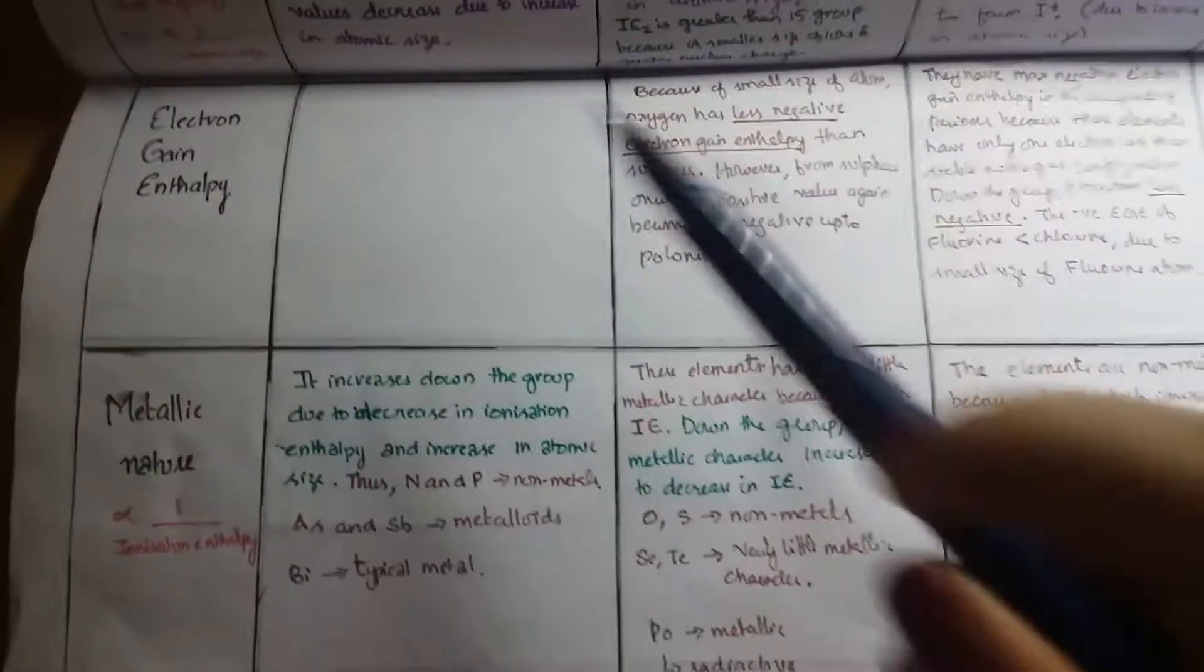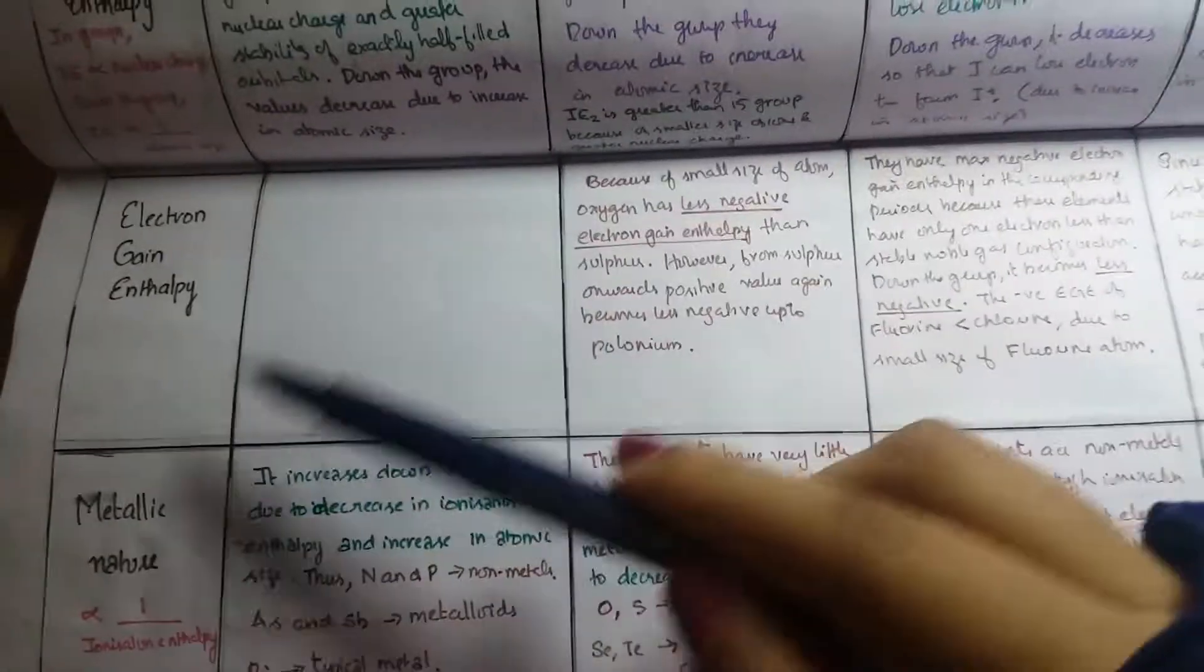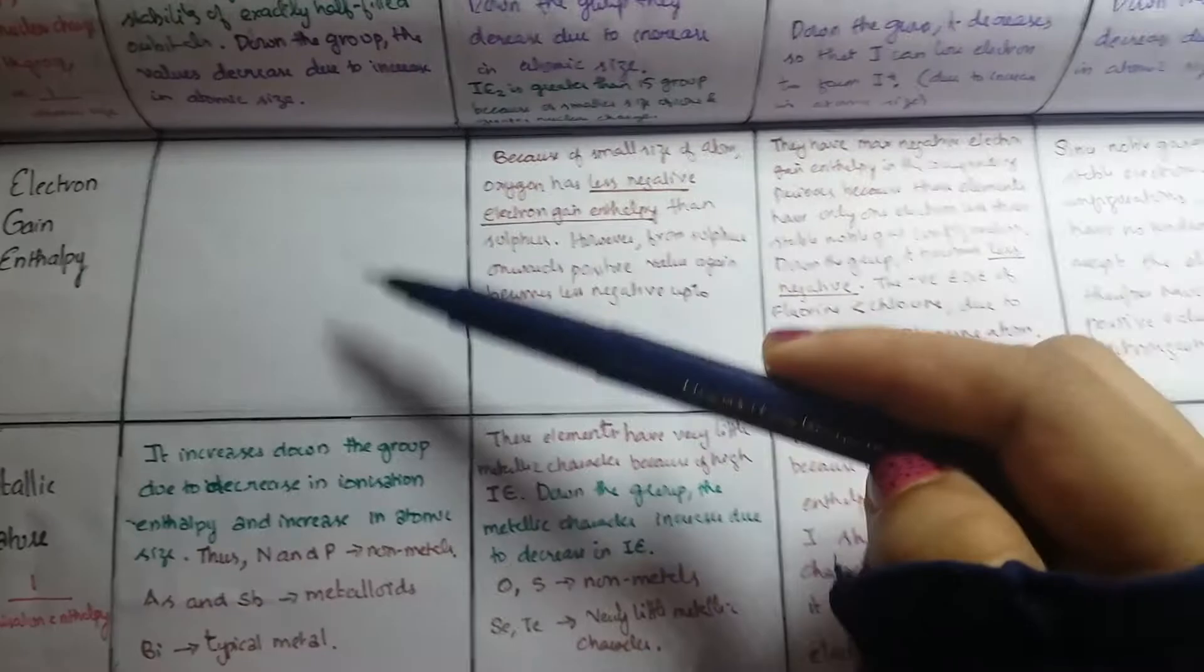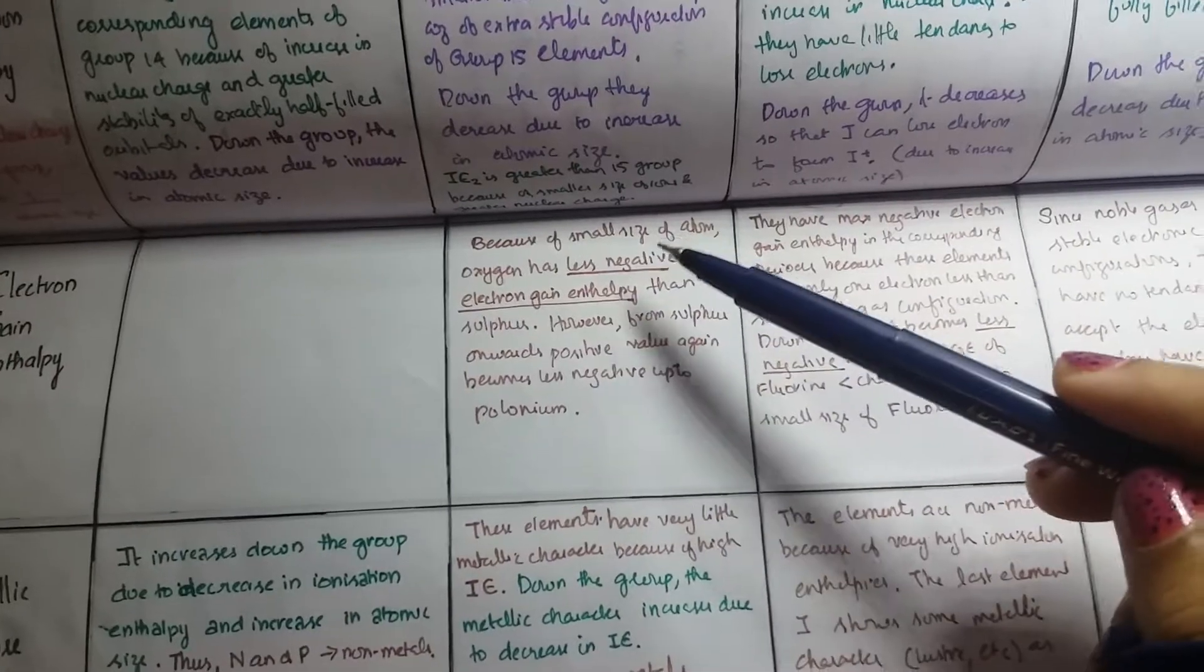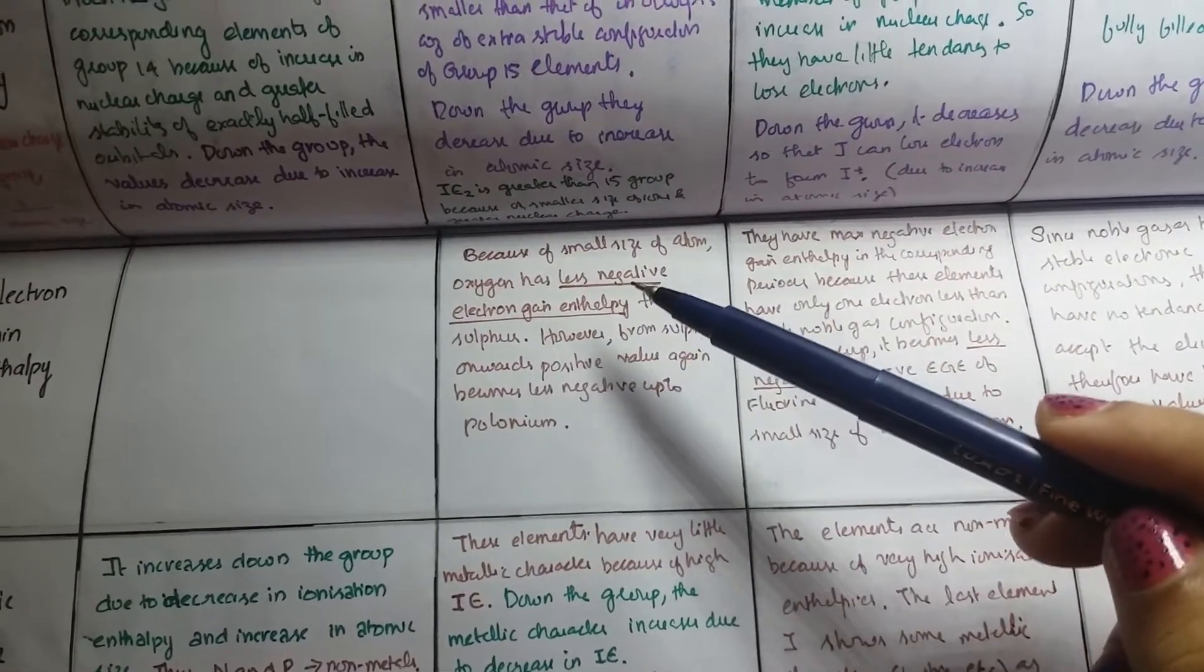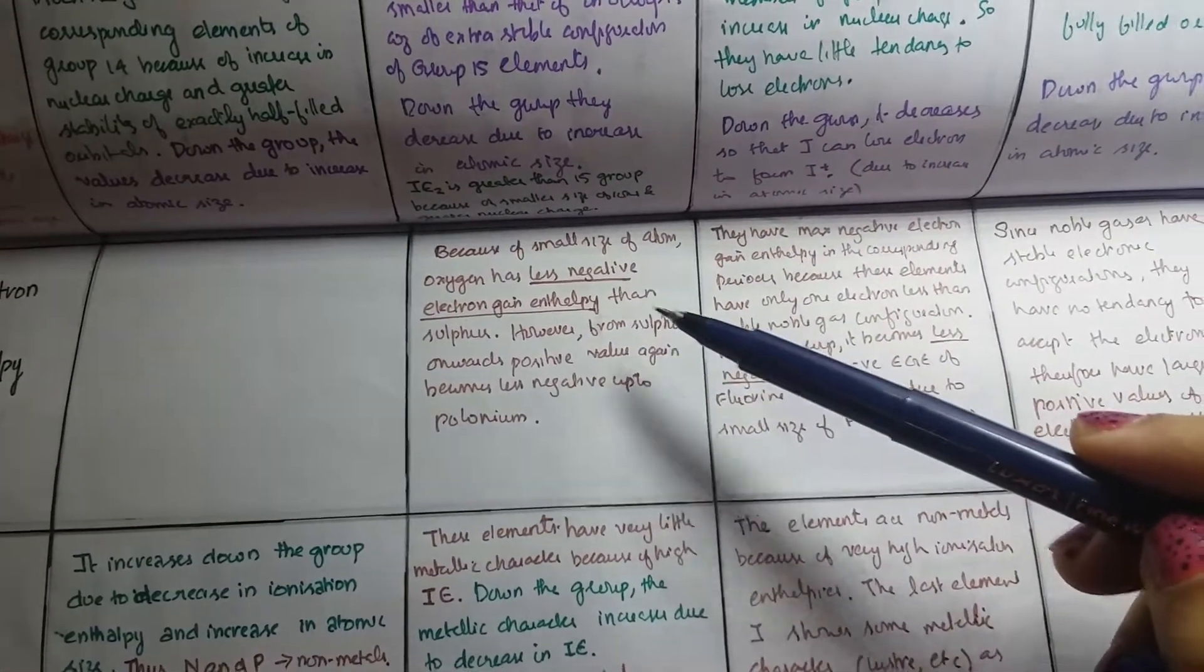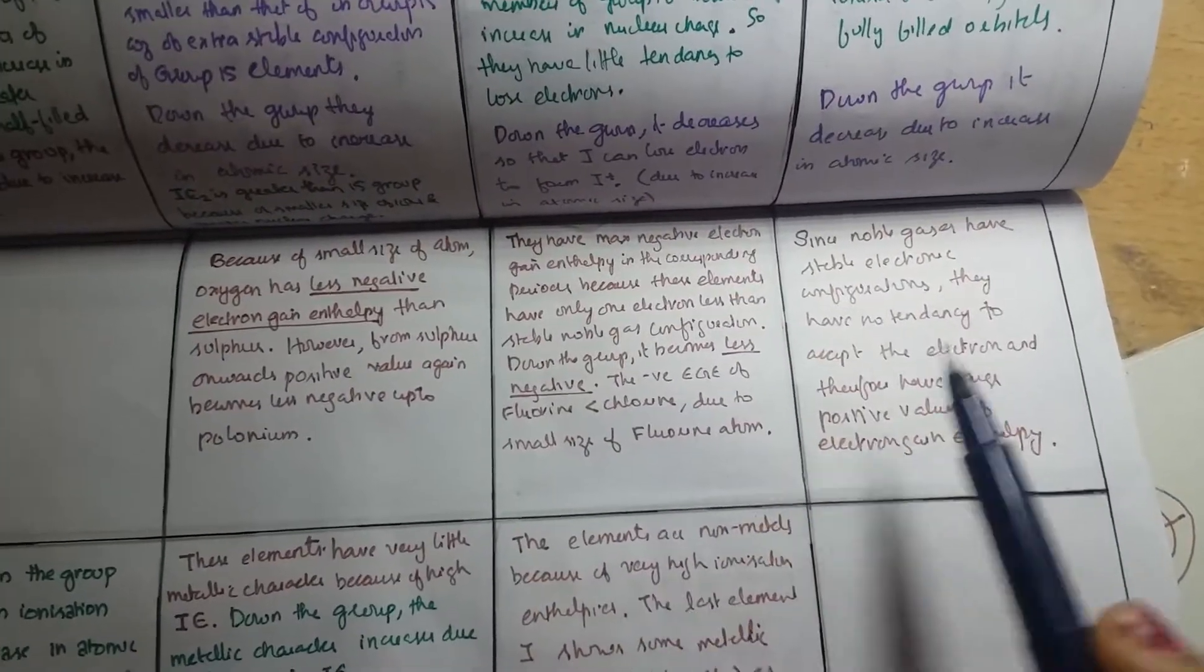Next is we have electron gain enthalpy. It is not mentioned about electron gain enthalpy of group 15, so let's go and look at group 16 elements. Electron gain enthalpy - because of small size of atom, oxygen has less negative electron gain enthalpy than sulfur. So such things, we just have to take a look at this.